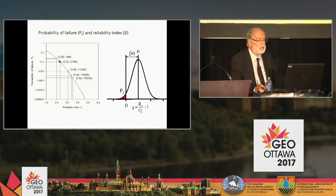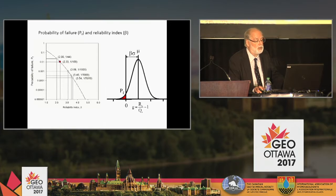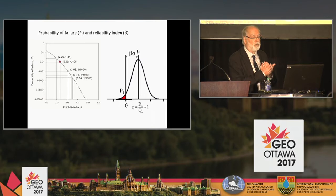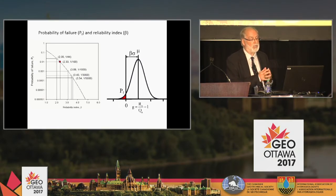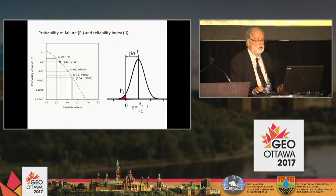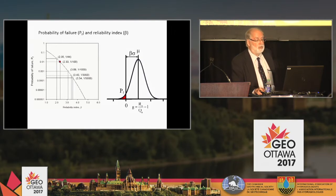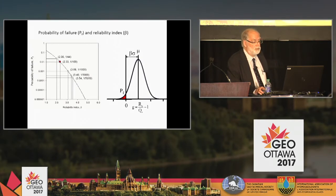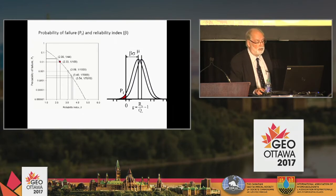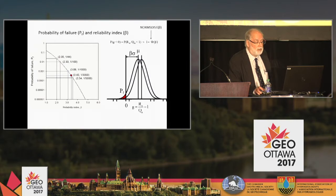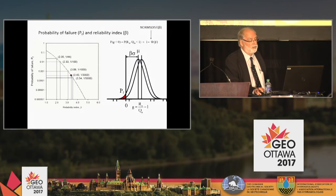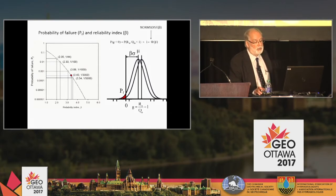Let's plot the distribution of G values generated in the previous example as a frequency distribution curve. The red area under this curve that falls to the left of G equals zero is the probability of failure. The reliability index beta is the number of standard deviations between G equals zero and the mean of the distribution. As we increase safe design instances, the distribution of G values shifts right and the probability of failure decreases as the reliability index increases. There is a simple approximation for probability of failure as a function of reliability index — the standard normal cumulative distribution function, available in Excel.